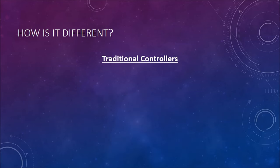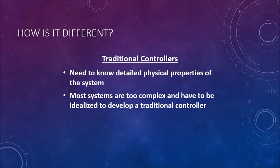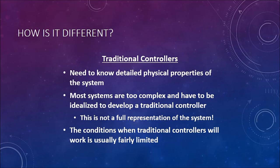So how is it different? Well, with traditional controllers, you need to know detailed physical properties of the system, and this can be difficult. Most systems are too complex and have to be idealized to develop a traditional controller. What this means is that you don't have a full representation of the system when you design your controller, and the conditions when traditional controllers will work is usually fairly limited.